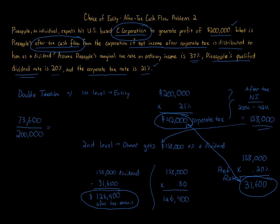...we find this is more than 35%. Specifically, $73,600 divided by $200,000 equals 36.8%. So the effective rate on this $200,000 of earnings is 36.8%.